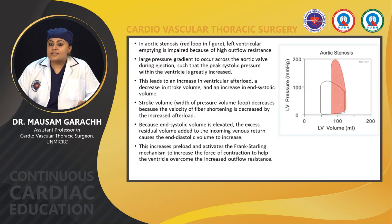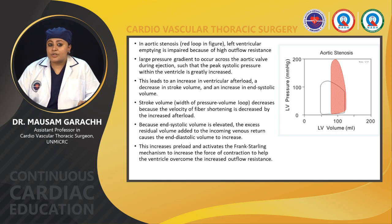Left ventricular emptying is impaired because of high outflow resistance. The large pressure gradient across the aortic valve during ejection means peak systolic pressure within the ventricle is greatly increased. This leads to increased ventricular afterload, decreased stroke volume, and increased end-systolic volume. Stroke volume decreases because velocity of fiber shortening is decreased by the increased afterload. Because end-systolic volume is elevated, excess residual volume added to incoming venous return increases end-diastolic volume, activating the Frank-Starling mechanism to increase force of contraction.